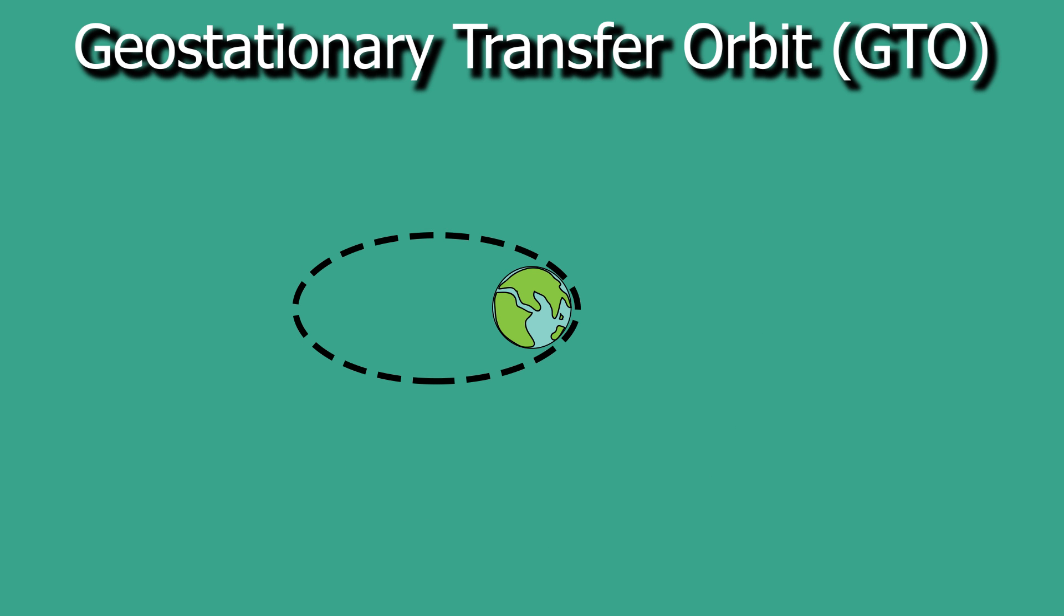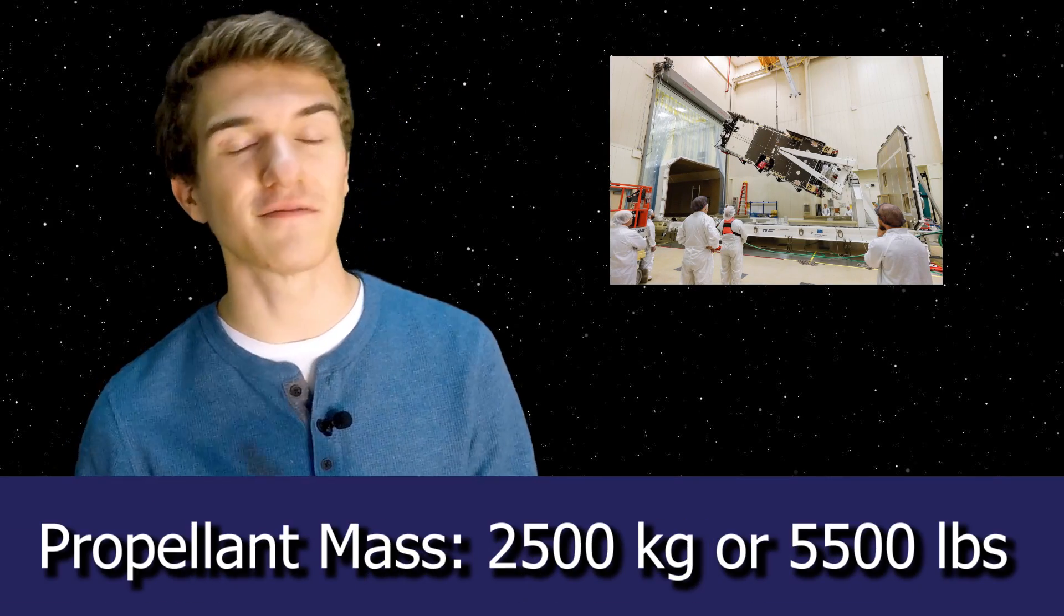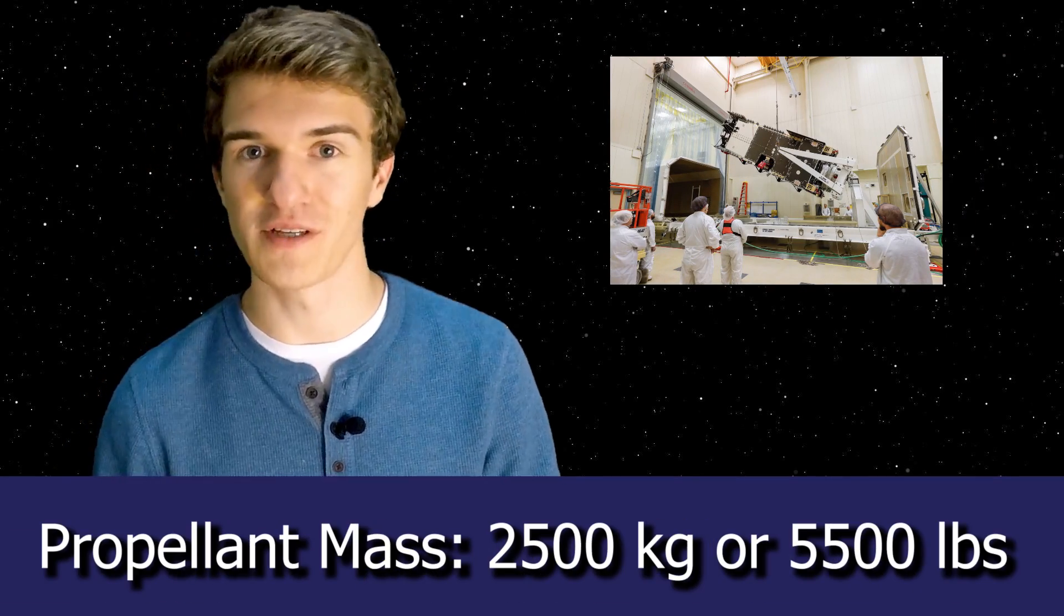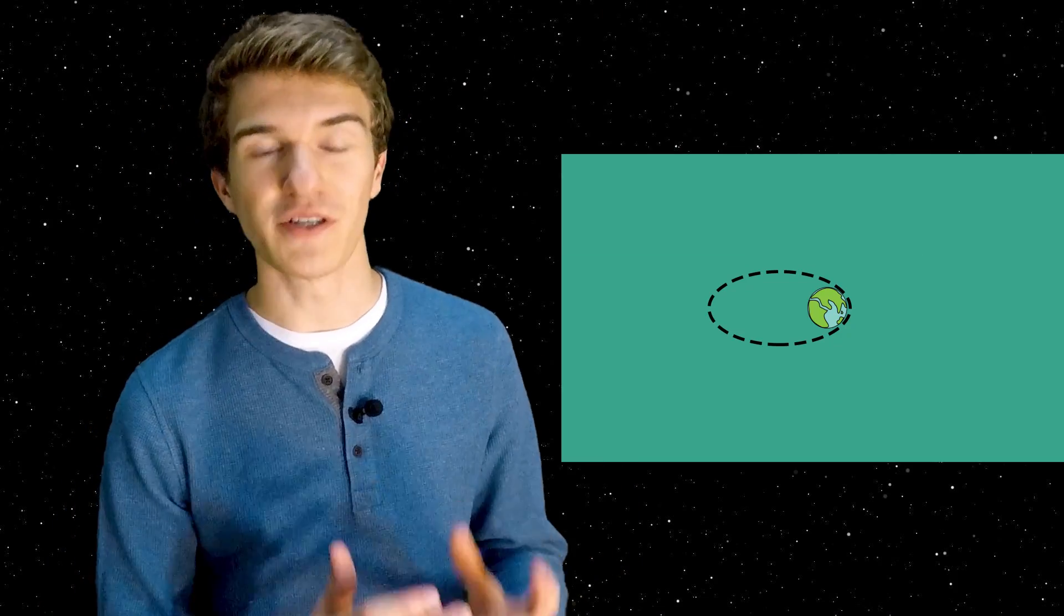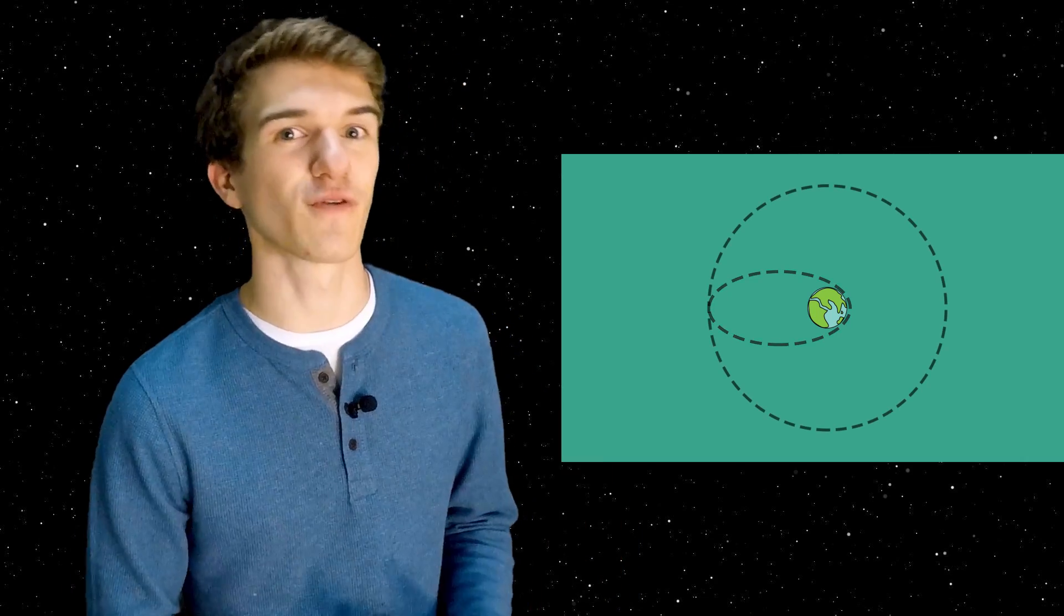Arabsat 6A has a mass of 6,000 kilograms, where 2,500 of those kilograms is just the fuel. So this spacecraft is incredibly massive. That is also why they need the Falcon Heavy, because it will get it into this geostationary transfer orbit, but it's also carrying a lot of fuel to get from the geostationary transfer orbit to a geostationary orbit. There's just a lot of energy going into sending these spacecraft to these orbits.